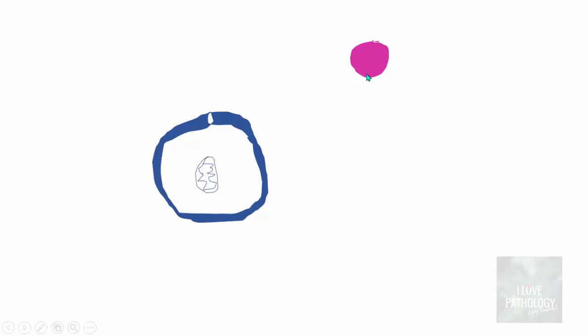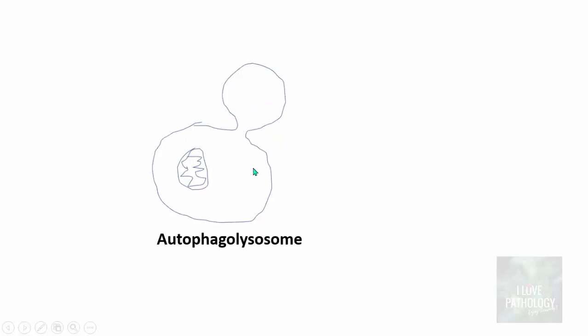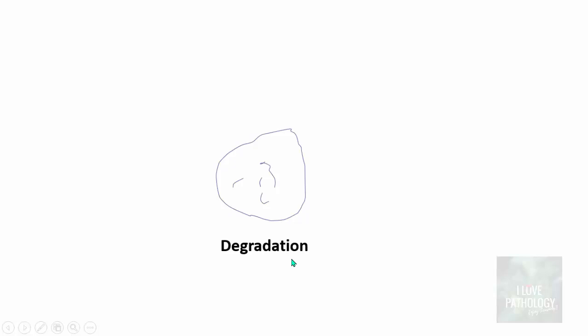Once the autophagosome is formed, a lysosome nearby — remember, all these things are happening within the cell — comes near the autophagosome and fuses to form an autophagolysosome. The lysosomal contents are delivered into the autophagosome and there is degradation. That's how degradation occurs in an autophagolysosome. This is the mechanism of autophagy, simplified.